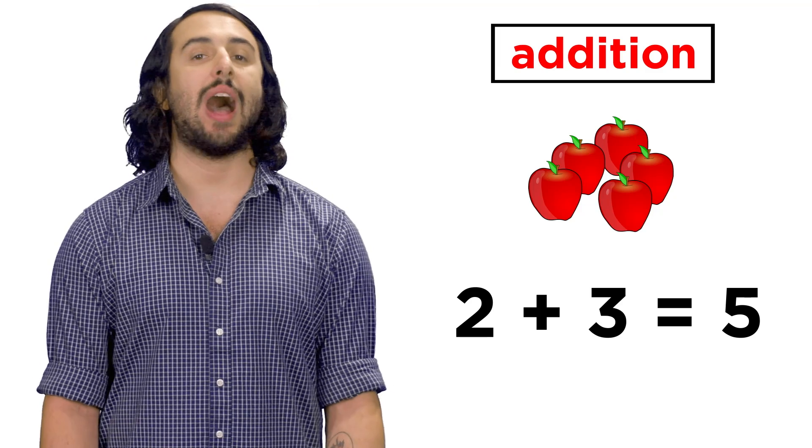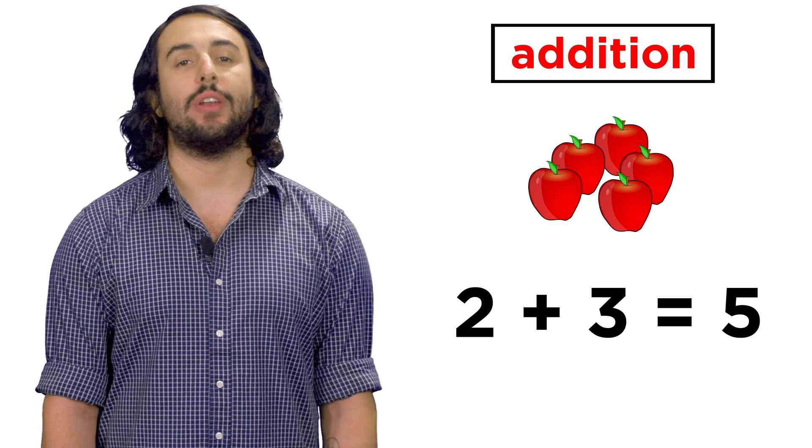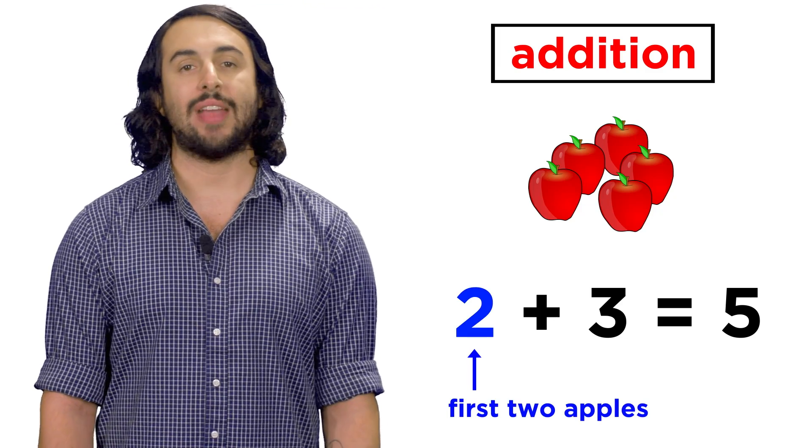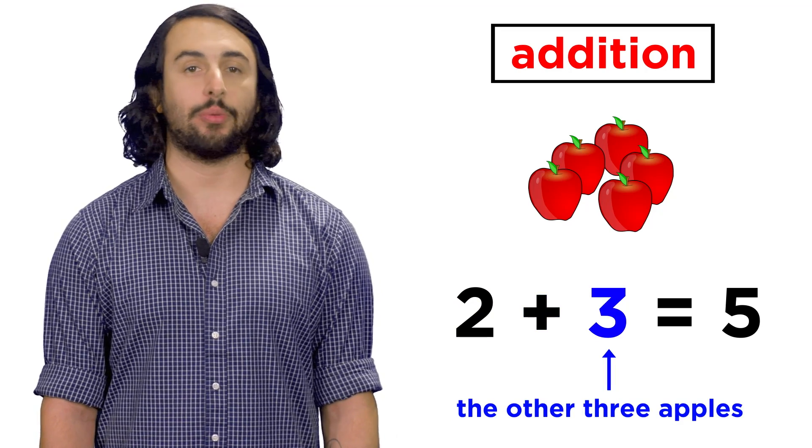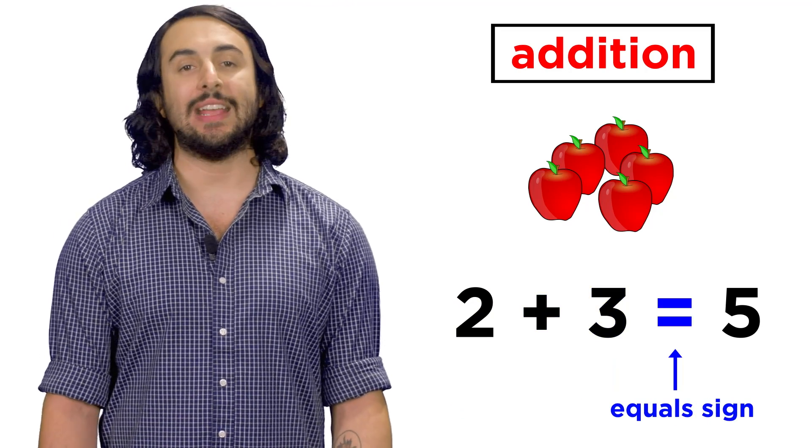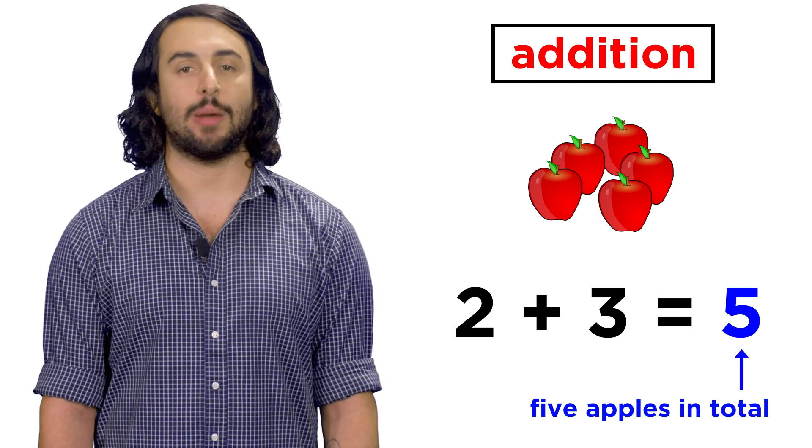Using the symbols that are common today, we would put the number two, then the addition or plus symbol, and then the number three, followed by an equals sign, and then the number five.